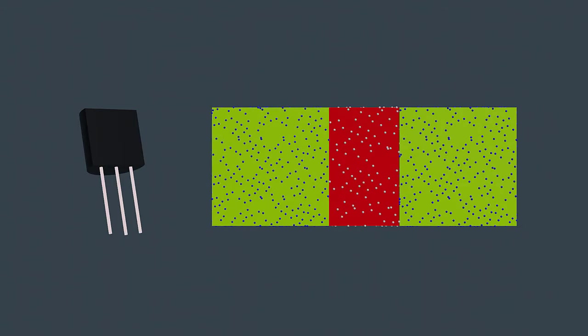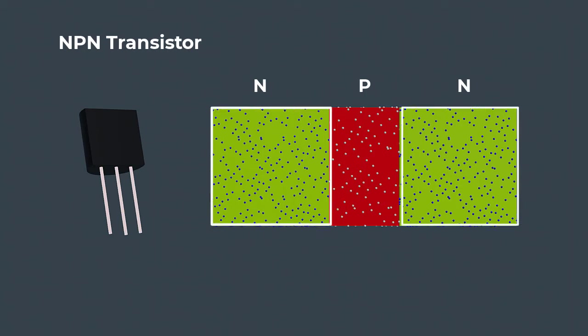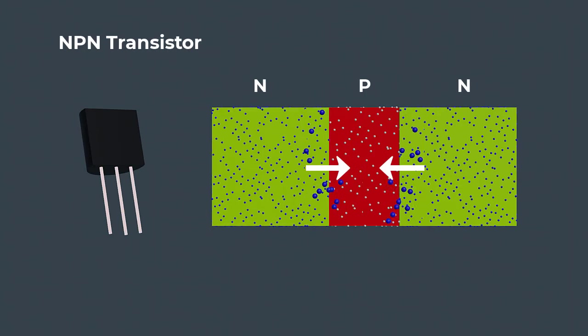This creates two PN junctions, one between the emitter and base and the other between the base and collector. Electrons are in high concentration in the emitter and collector regions, therefore they migrate to the base region.